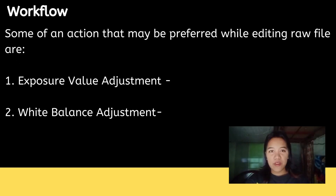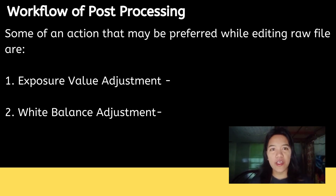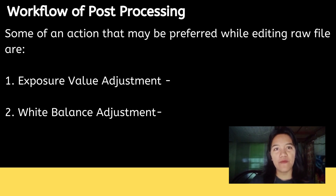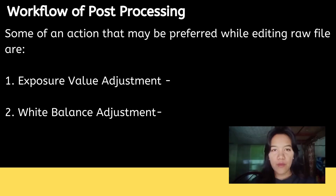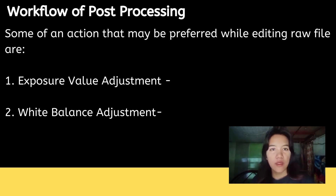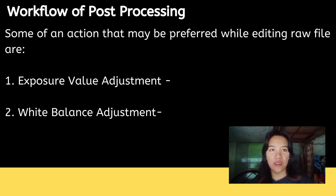The workflow of post-processing involves several actions that achieve great results when applied to a RAW file. Number 1 is exposure value adjustment, which controls the brightness of an image so it doesn't look too dark or too bright. Number 2 is white balance adjustment, which adjusts the digital photo to make its colors appear more realistic.